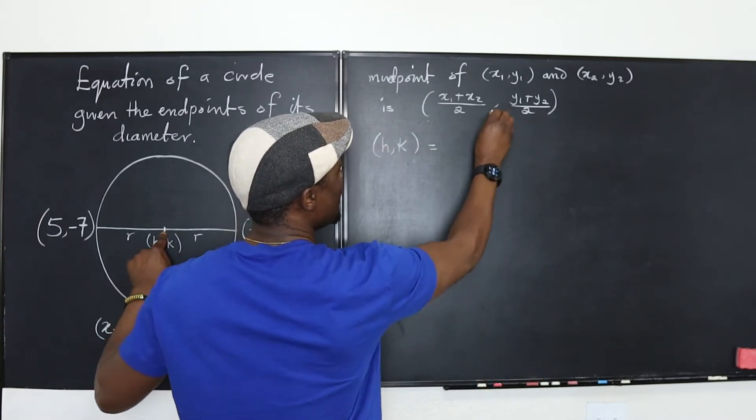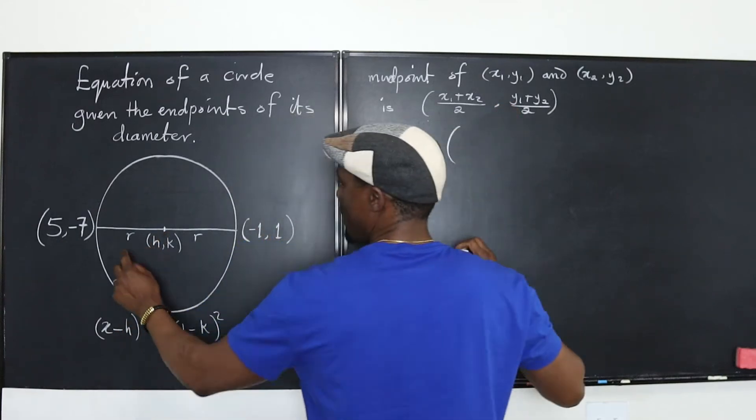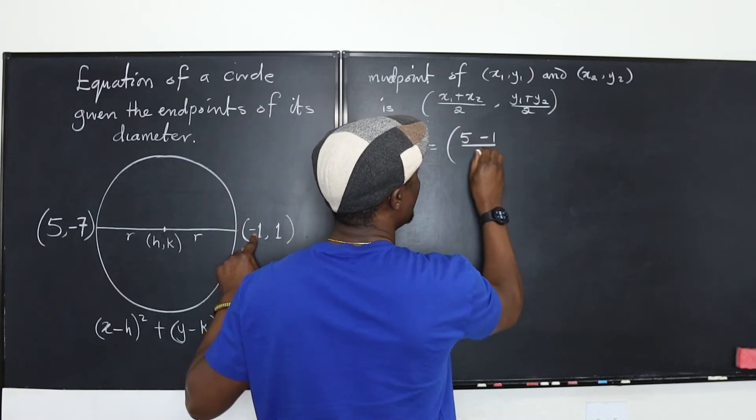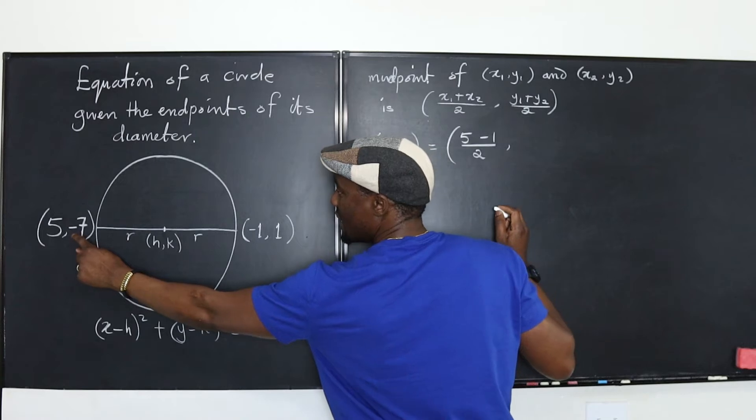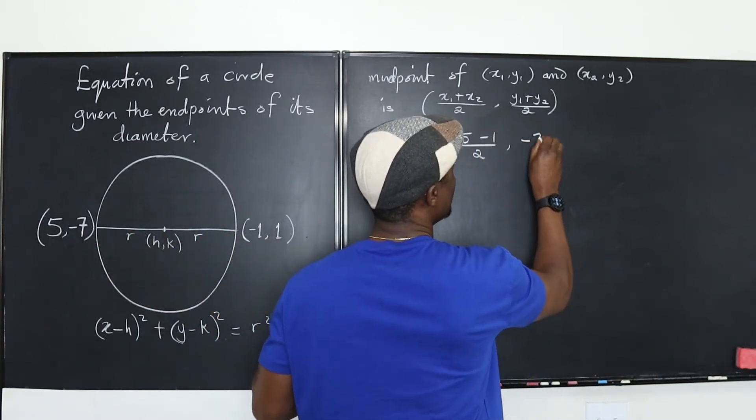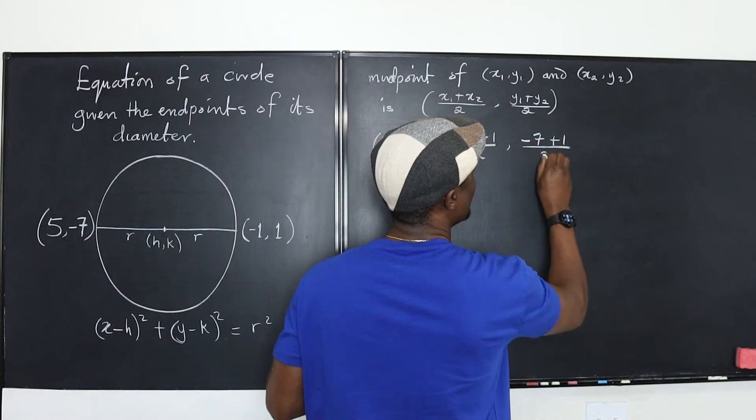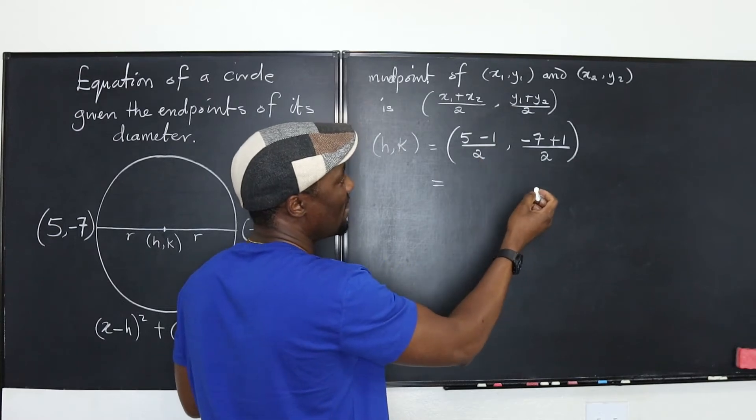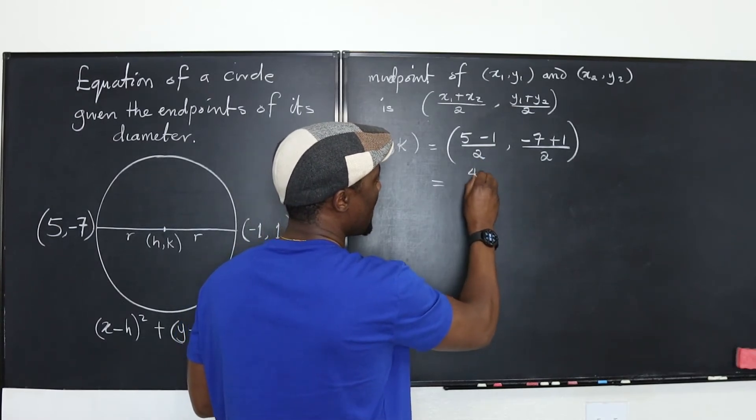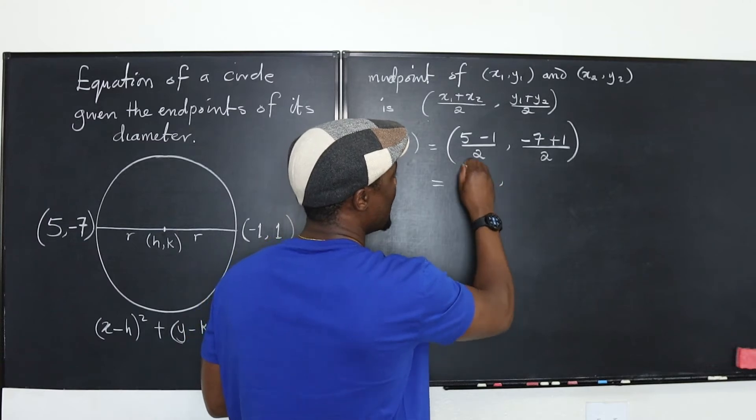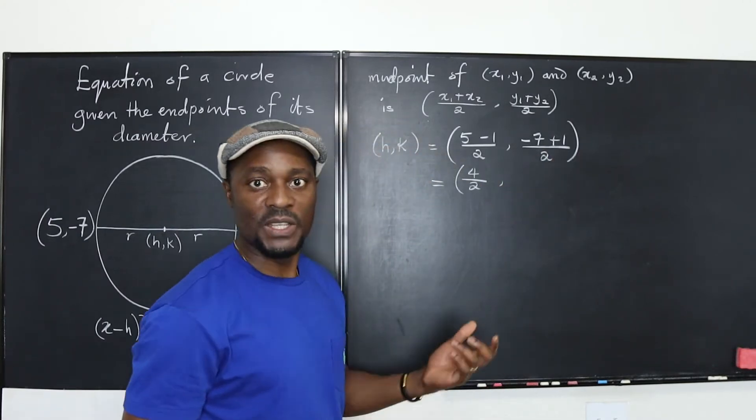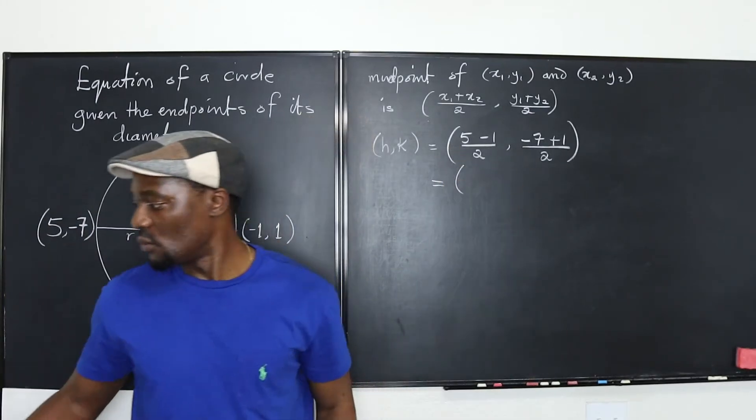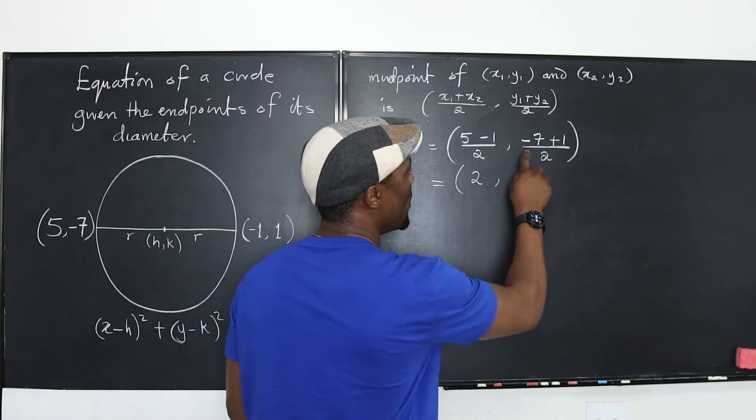So that's what we're going to apply here. We're going to find the midpoint and say that h, k will be the point 5 plus negative 1. That's going to be 5 minus 1 over 2, comma, this is going to be negative 7 plus 1, negative 7 plus 1 over 2. And what does that give us? This tells us that h, k is 4 over 2, comma, and what would this be? We know what 4 over 2 is. It's just going to be 2. So let's just do the math. This is 5 minus 1. That's 4 divided by 2. That gives you 2. And what does this give us? This is negative 6 over 2. That's negative 3.